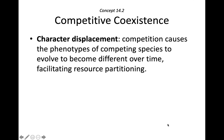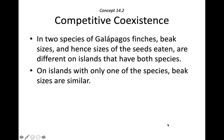Character displacement is an evolutionary consequence of resource partitioning that drives species to evolve over time to favor that resource partitioning. We saw this with Darwin's finches — they evolved similar characteristics on the same island to compete for predominantly the same seed types. Darwin noticed they may have very differently shaped beaks across different islands, targeting different types of resources.